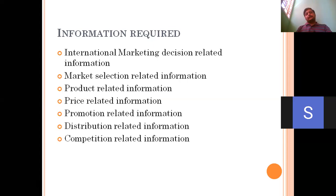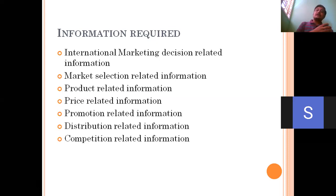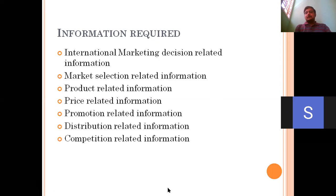Competition-related information is also essential. We need to gather complete, pin-to-pin information about our competitors and what moves they are taking. We need to be ahead of them in terms of pricing, promotion activities, ads, brand ambassadors, and reaching the product to the end consumer. All of this comes under competition-related information, and it is mandatory to have all these informations.